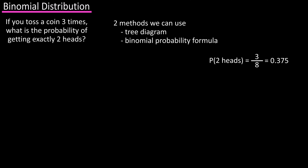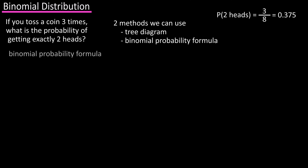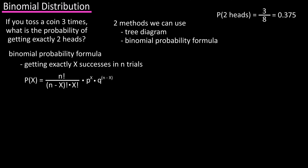The second way to find the probability is to use the binomial probability formula. The formula for getting exactly x successes in n trials is: probability of x equals n factorial divided by n minus x factorial times x factorial, times p to the x, times q to the n minus x. This formula may look a bit intimidating, but it's actually not that bad if you break it down, and we'll use our probability question to do that.